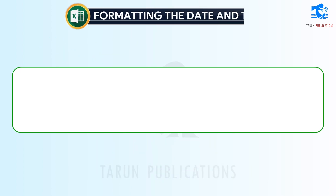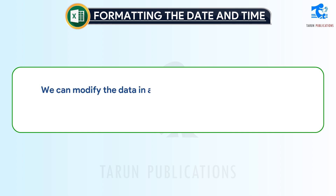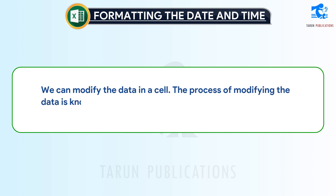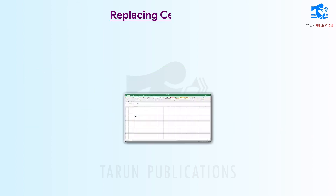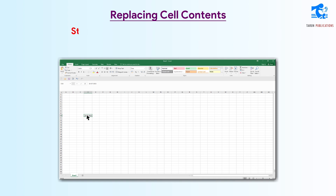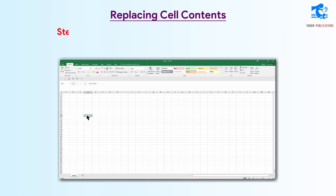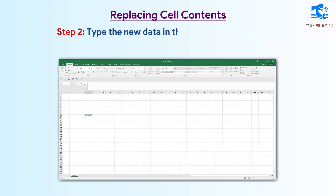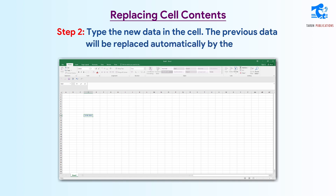Changing cell contents. We can modify the data in a cell. The process of modifying data is known as editing. We can edit cell contents in two ways. Replacing cell contents: follow these steps to replace the contents of a cell. Step 1: Click on that cell to make it an active cell. Step 2: Type the new data in the cell. The previous data will be replaced automatically by the new data.